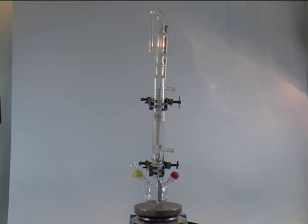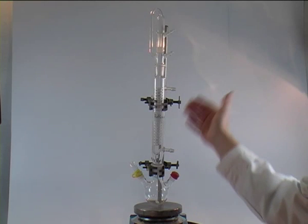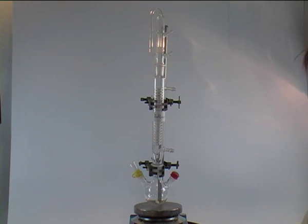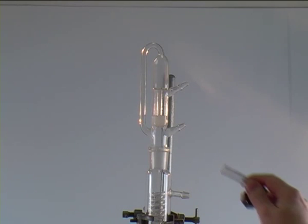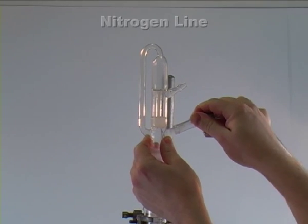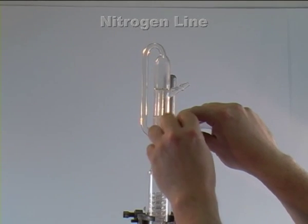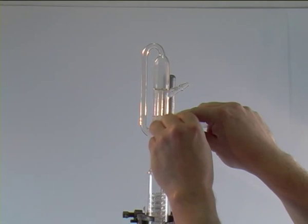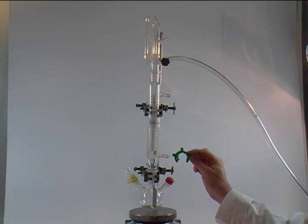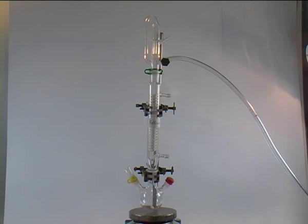And all that remains is to connect the lines, the water for the reflux condenser and the nitrogen for the nitrogen bubbler. Now we connect the nitrogen inlet of the nitrogen bubbler with the nitrogen line and we secure it with a jubilee clip. Once that is done, we clip the nitrogen bubbler with a green clip securely on top of the reflux condenser.